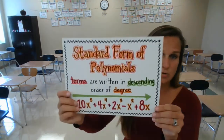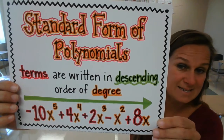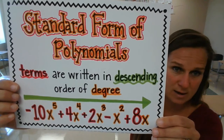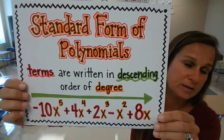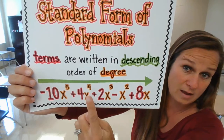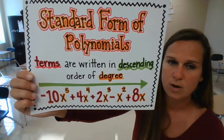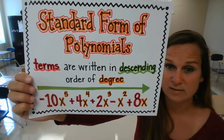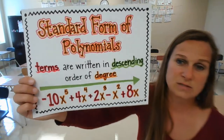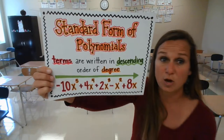As we talk about the size of exponents, we also have to put these polynomials in standard form. The standard form of a polynomial is when the terms are written in descending order of degree. So this goes from an exponent of 5, 4, 3, 2, then exponent of 1. Remember, if there's no exponent appearing, then we know that's an exponent of 1. Standard form goes from highest exponent down to lowest exponent.